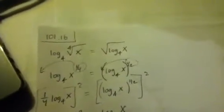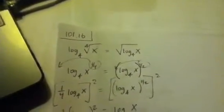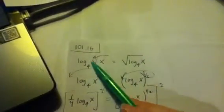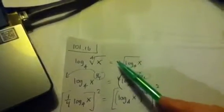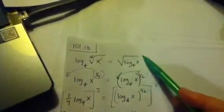Here's precalc lesson 101 number 16. It starts out with log base 4 of fourth root of x, and this one has got the square root over the whole thing.